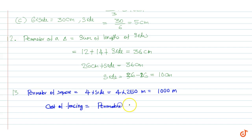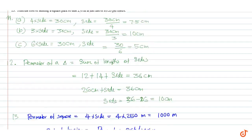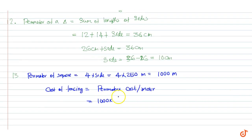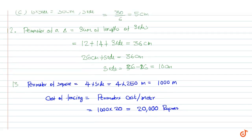Cost of fencing is equal to perimeter times cost per meter. This is equal to 1000 into 20, that is equal to 20,000 rupees. These are our answers.